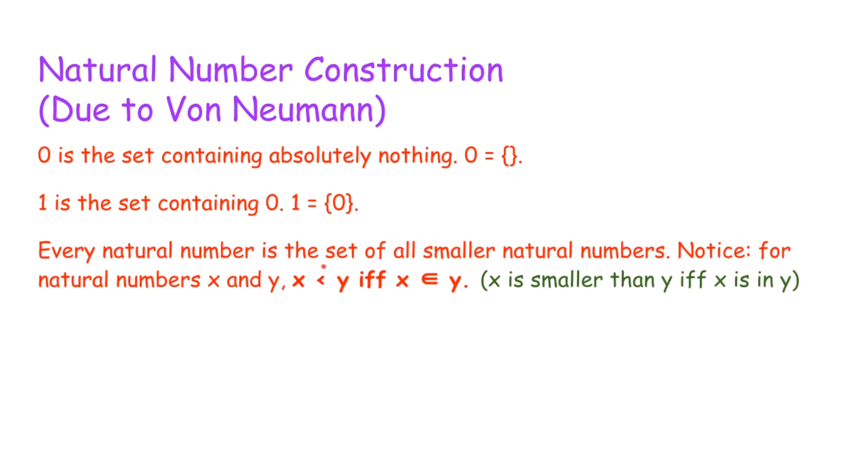And every natural number is the set of all smaller natural numbers. So you should notice for any natural numbers x and y, so for example zero and one, x is less than y if and only if x is in y. So zero is in one, so we have that zero is less than one.